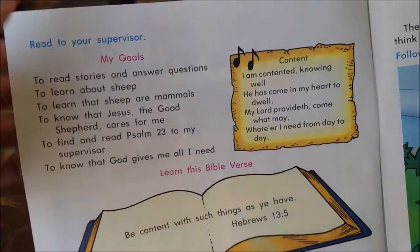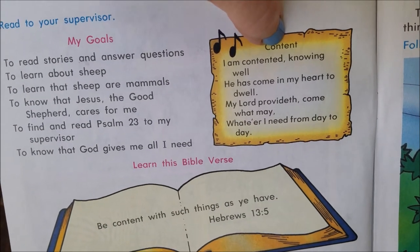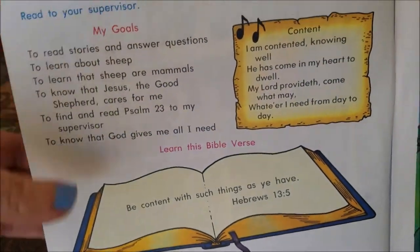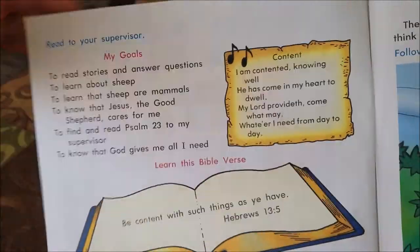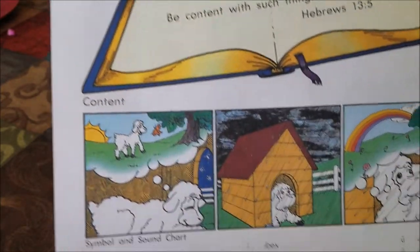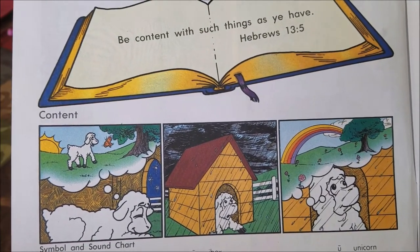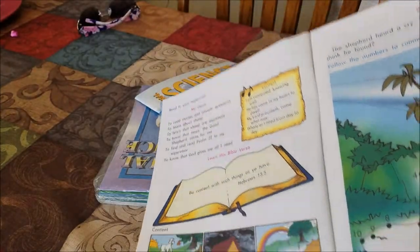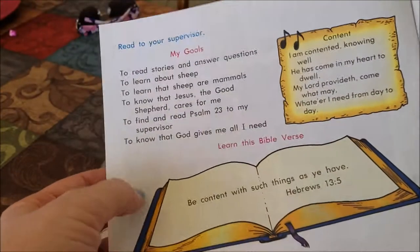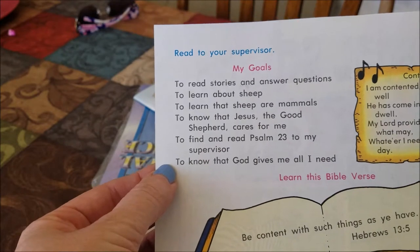There is also a character study used in each pace — they're going to learn a character trait, and this is throughout the whole entire ACE curriculum; every pace has one. The Bible verse here is about being content: 'Be content with such things as you have,' Hebrews 13:5. It also has cute little cartoons to go along with the kids. I did ACE from seventh grade through 12th grade, and I loved those. The child is also going to find and read Psalms 23 to their supervisor.